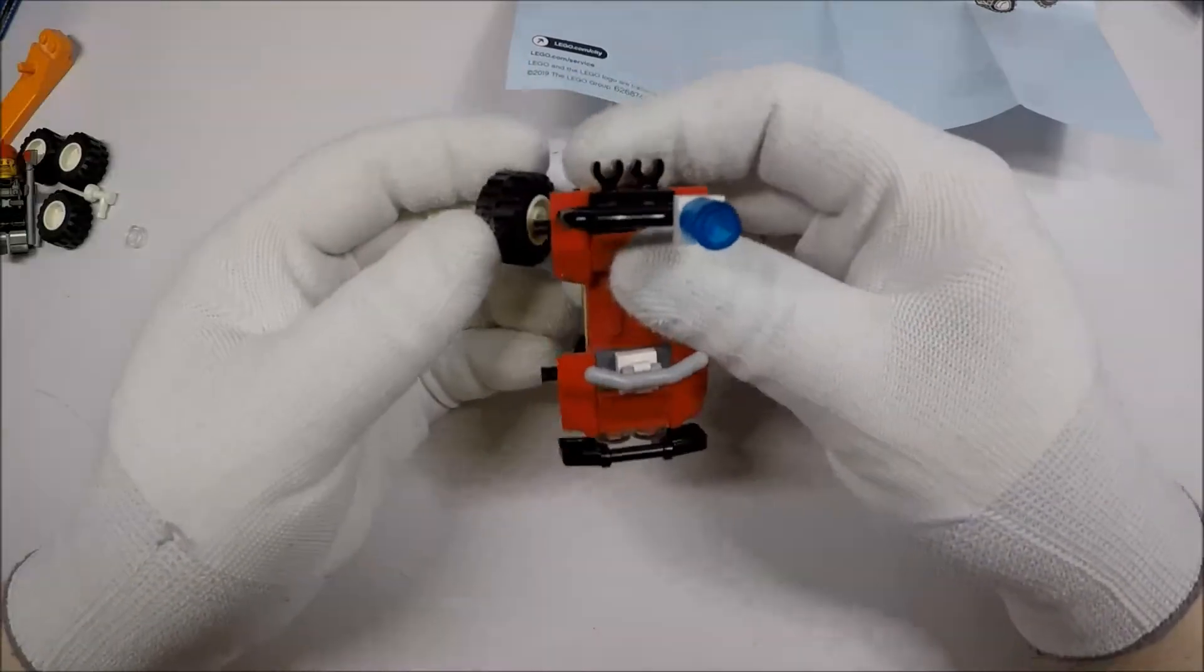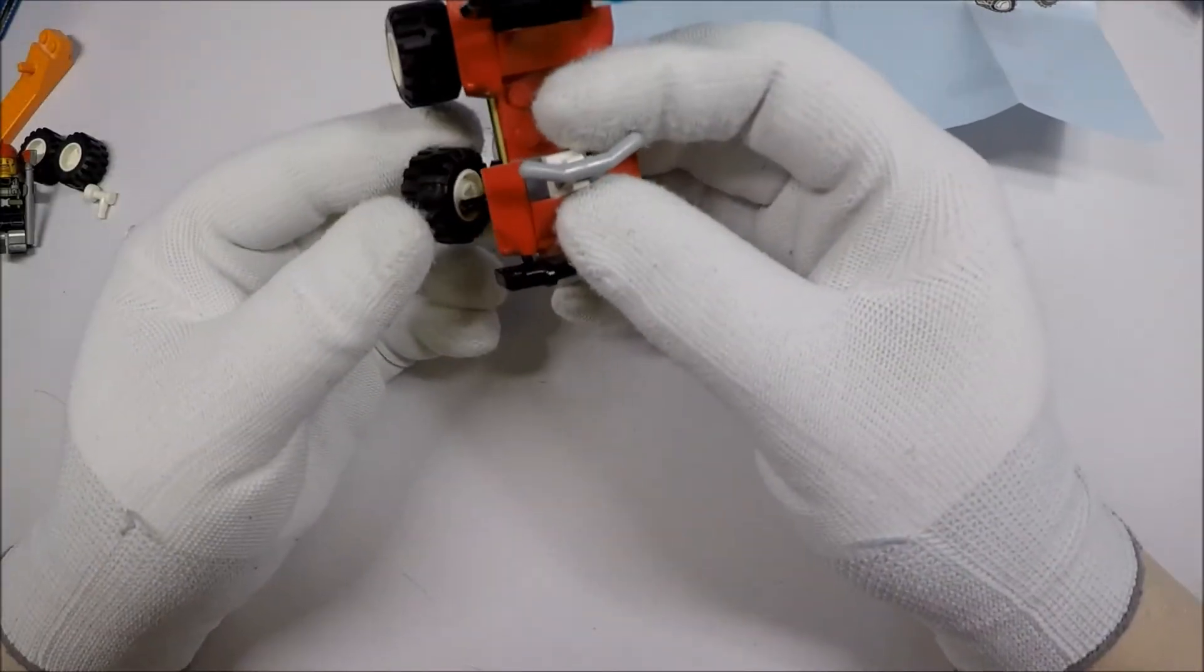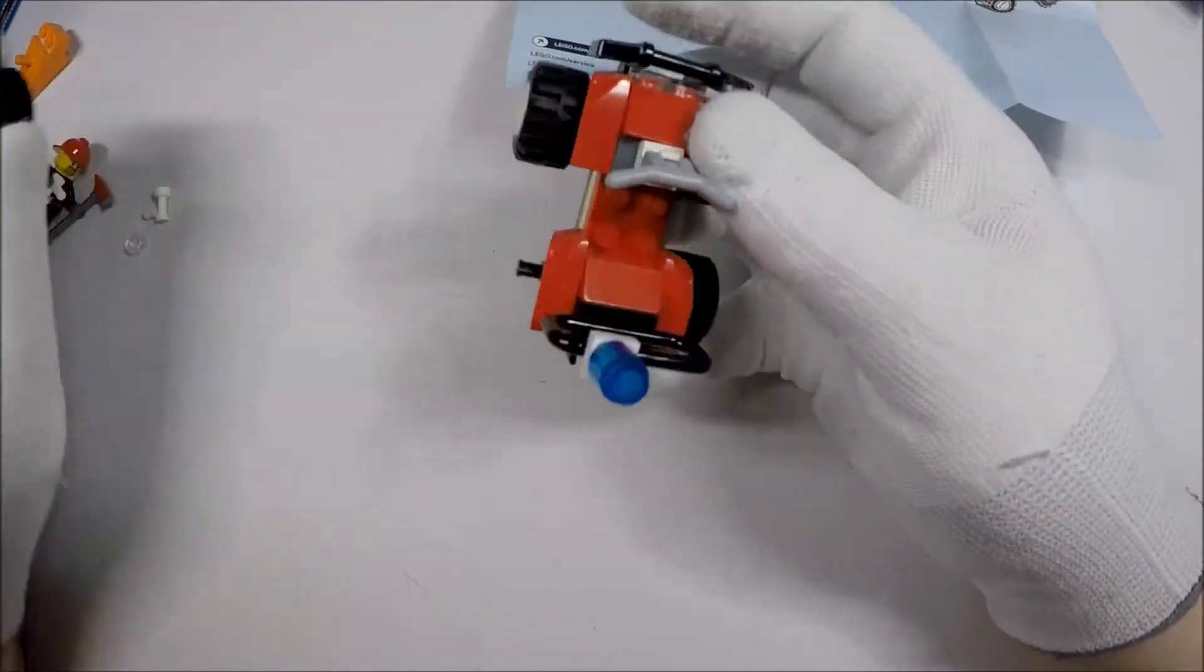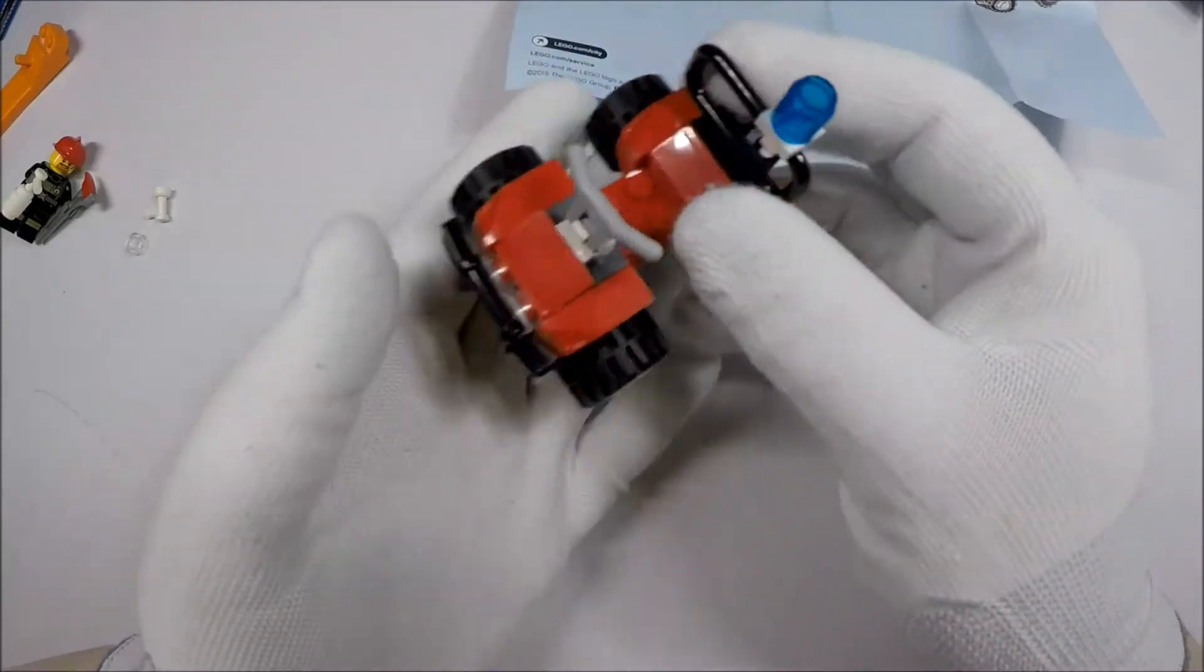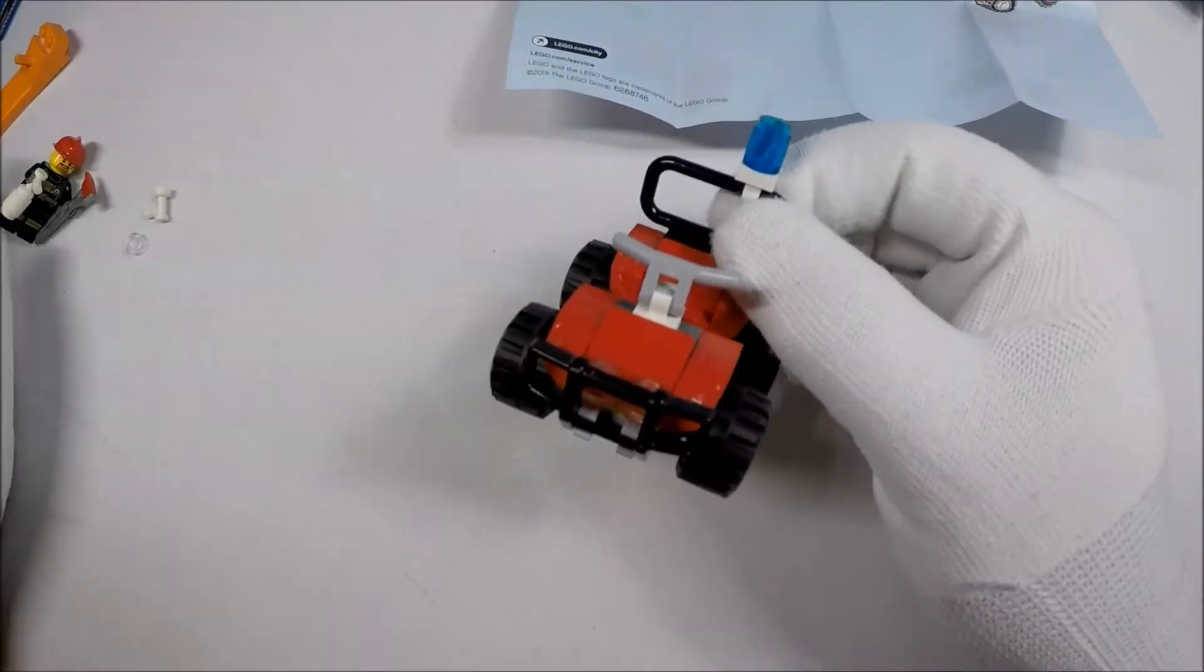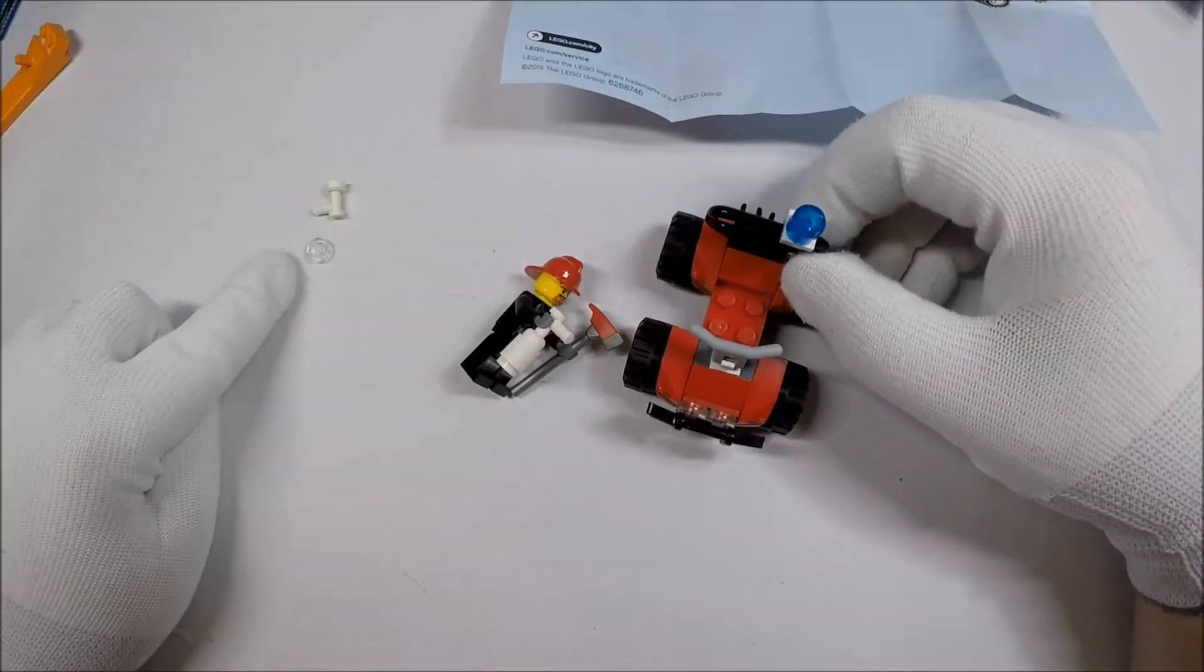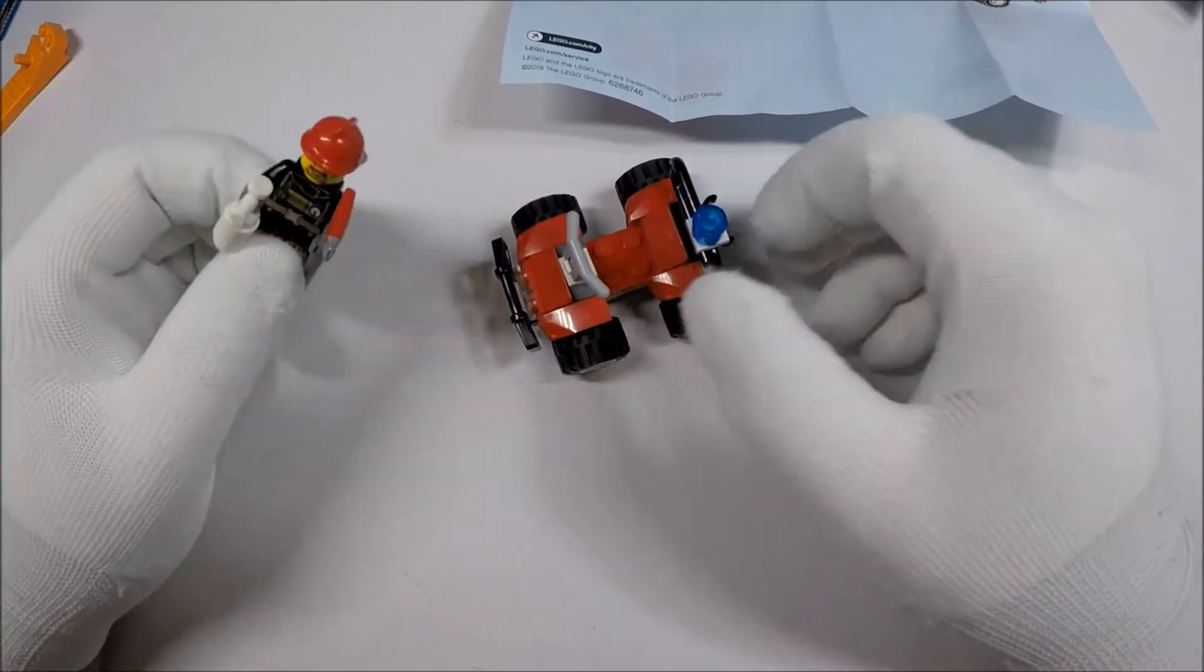And then lastly, we just pop on the wheels. I like the looks of these wheels. I like the kind of, these aren't the giant wheels. They're like mid-sized wheels, I guess. They look pretty good. So this is our ATV. And this is our dude. And we have an extra clear one and an extra fire extinguisher handle thing. That's our extra pieces.